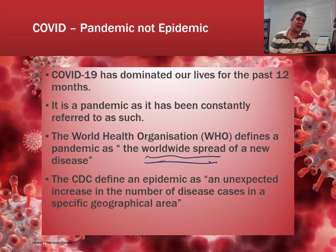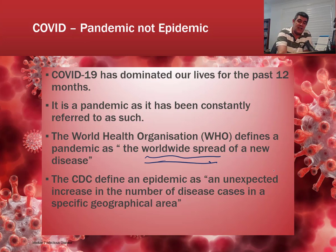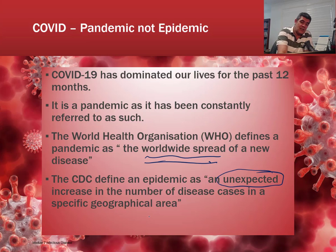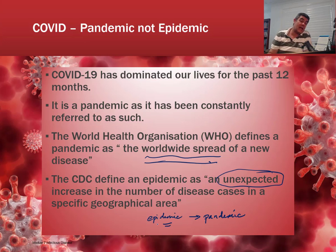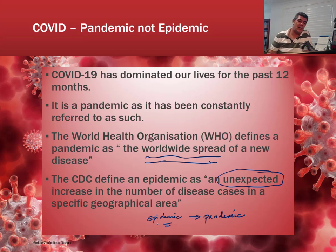We get a sense of the difference between a pandemic and an epidemic if we start to think about the geography associated with these two terms. The CDC, which is the Center for Disease Control in the United States, defines an epidemic as an unexpected increase in the number of disease cases in a specific geographic area. So realistically, we have to have an epidemic before we can have a pandemic. If a disease's incidence is zero and it's new, that's very unexpected, and if the number of cases escalates in a short period of time, that starts to move into the epidemic range.